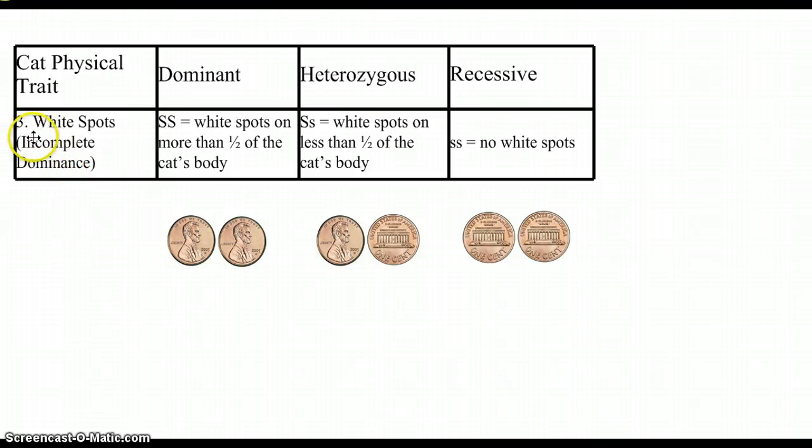Now I'm going to look at the third trait, tossing. Again, mom would have one coin. Dad would have another coin. Now I'm looking if it has white spots, which is an incomplete dominance. Two heads, white spots on more than half the cat. Just kind of eyeball it when you're coloring it. Heterozygous, white spots, less than half, and it can be spread out over the cat. It doesn't need to be all in one spot. And if mom throws a tail, dad throws a tail, then there are no white spots.